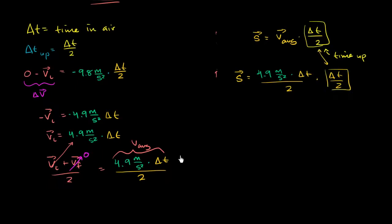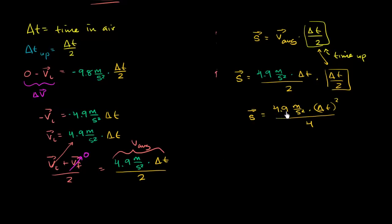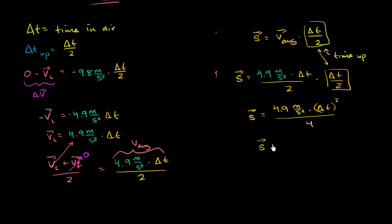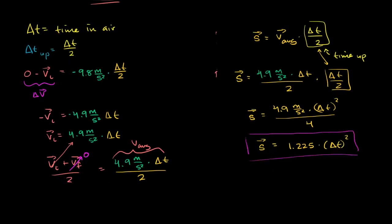These two time factors are the same thing, so we can simplify. Our maximum displacement is equal to 4.9 meters per second squared times delta t squared, all over 4. Dividing 4.9 by 4 — let me use a calculator to avoid a careless mistake — gives 1.225. So our maximum displacement equals 1.225 times the total time in the air squared. That's a pretty straightforward calculation for the max displacement.